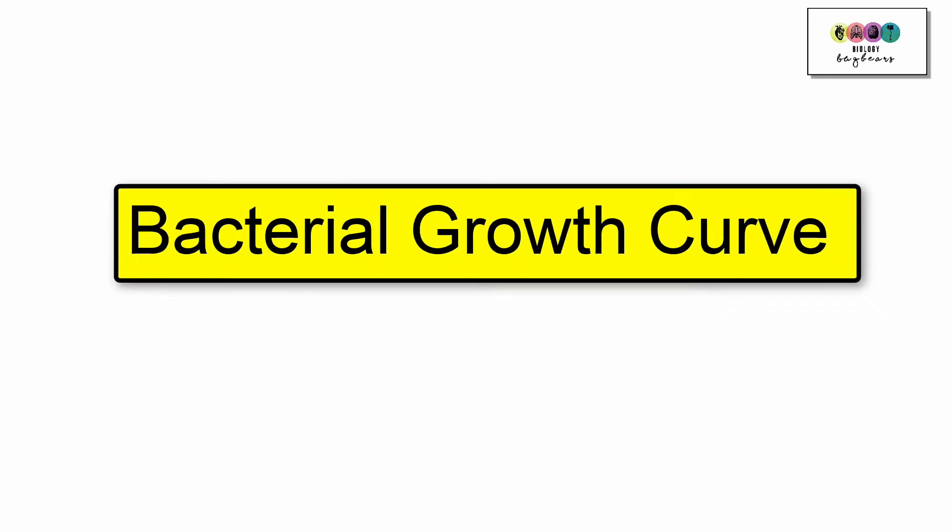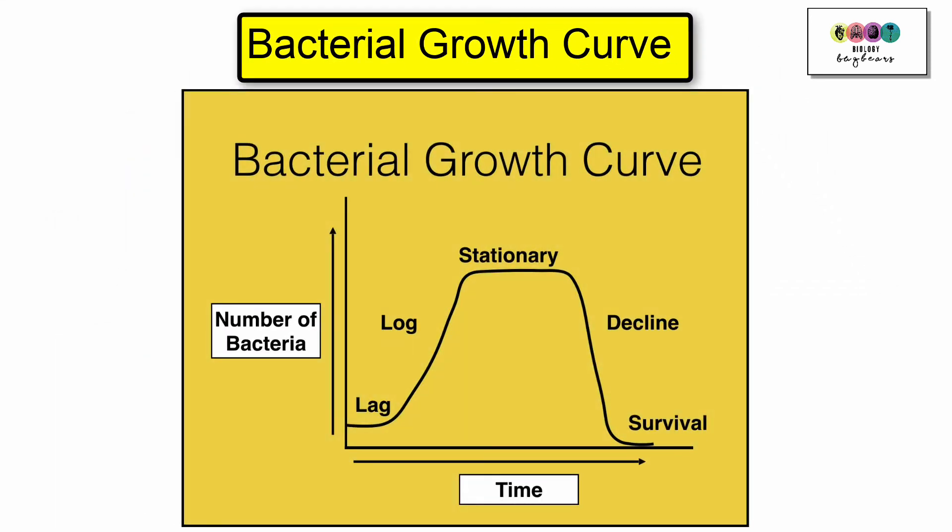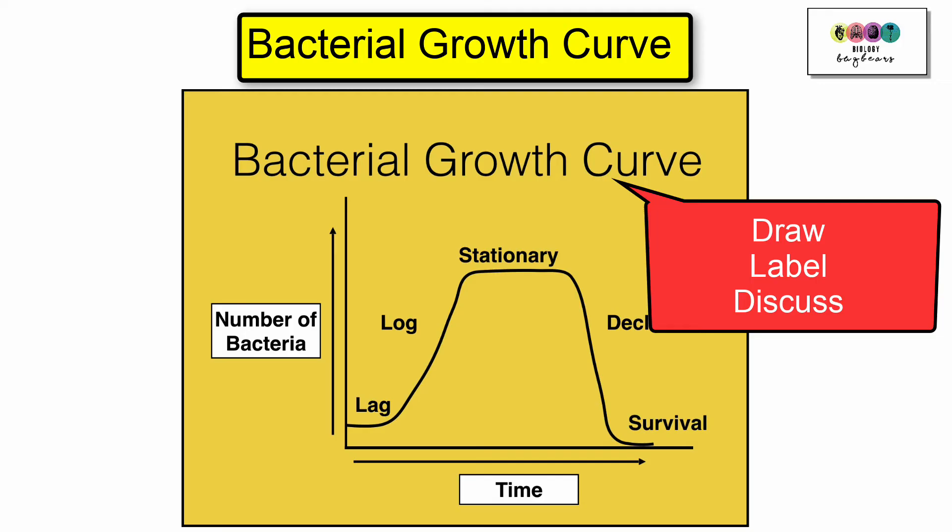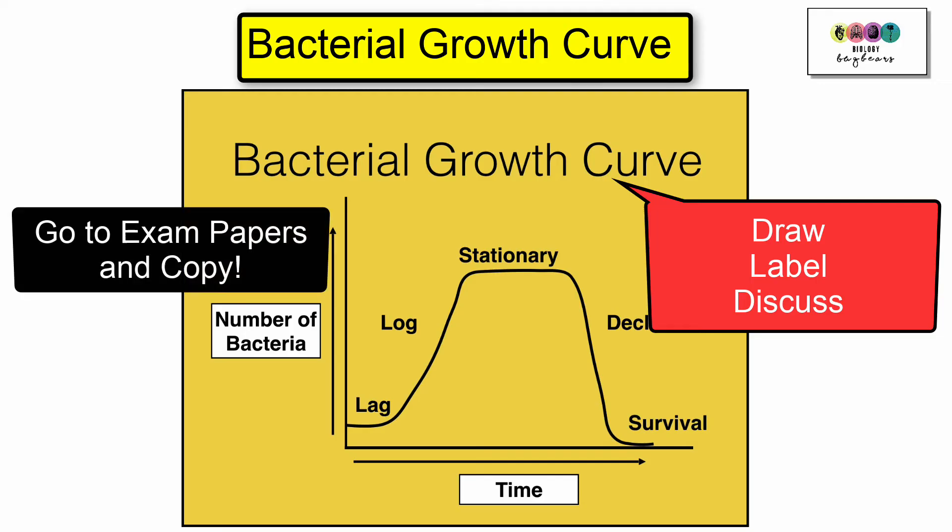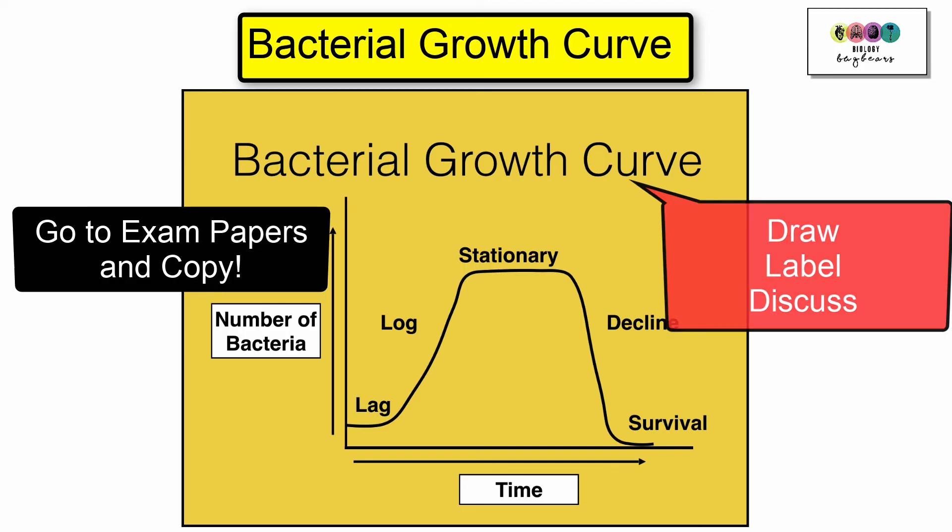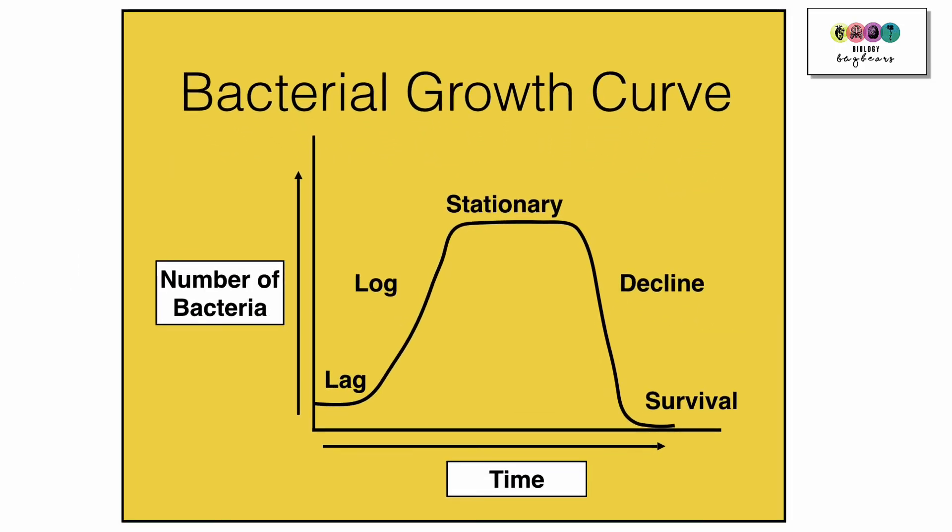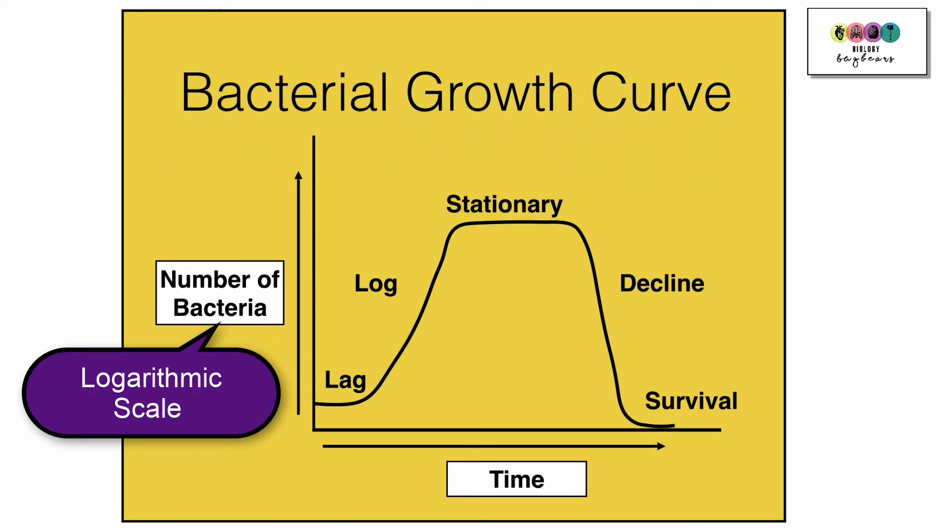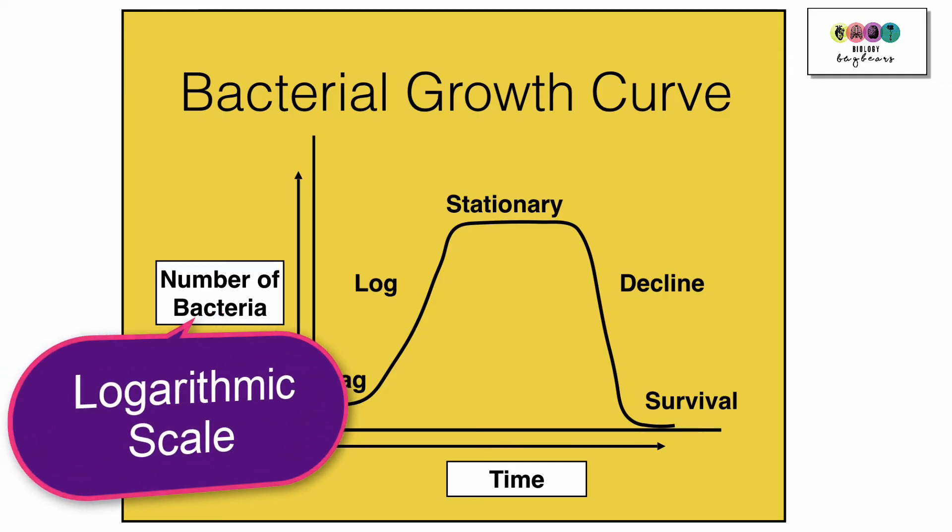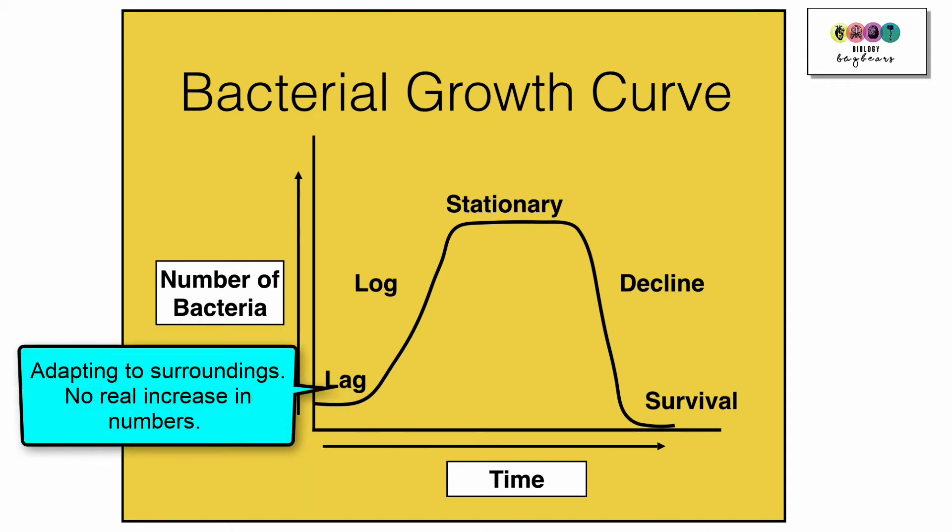Bacteria can reproduce very quickly and the bacterial growth curve is a very important graph. It's showing how bacterial numbers increase and decrease over time. You need to be able to reproduce this graph from scratch yourself, label it correctly and discuss what's happening at each stage and give reasons for it. Firstly, you have to know how to label the axes. The most important thing to remember is that on the y-axis, the number of bacteria, because we're discussing such huge numbers of bacteria we have to use the logarithmic scale and that's really important. And then along the x-axis is time.